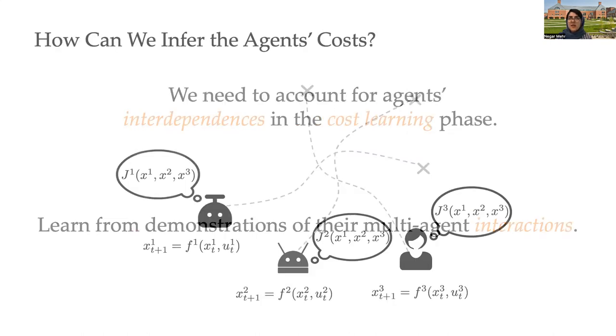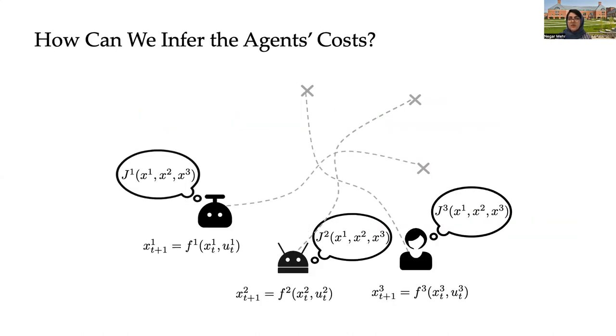We do this in a game theoretical setup, where we assume that every agent is a dynamical system and every agent is trying to minimize its own cost, but agents' costs are interrelated, and agents cannot optimize their cost functions in isolation.